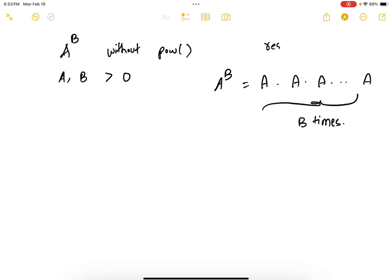Initially my result will be one. That is how I declare my result to be one. And for every iteration up to b times, I keep multiplying a to the result and store the result back in the result variable itself. So that's the pattern here.